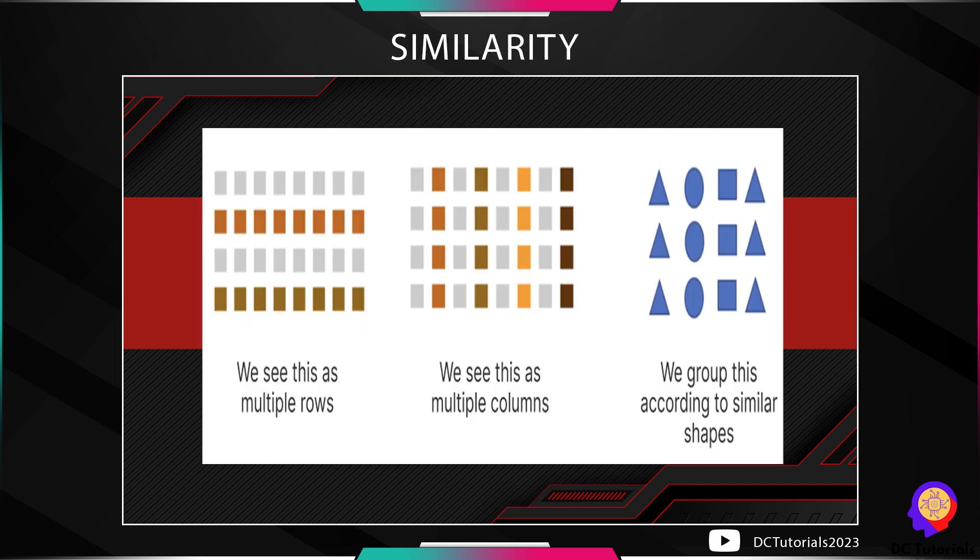The next principle is the principle of similarity — our brain tends to group things together when they are similar to each other. In our example, objects in rows are grouped because rows share the same colors, while in another figure they are grouped vertically due to similarity of colors. In the rightmost figure, elements are grouped vertically because those aligned vertically share the same shapes.